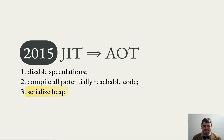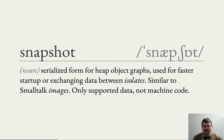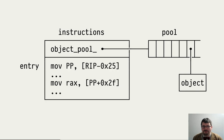The most interesting part is the serialization of heap structures. Dart VM already had support for serializing most of its internal heap structures through something called snapshots — serialized forms of heap object graphs, similar to what Smalltalk calls images. Unfortunately, by the point when we needed ahead-of-time compilation, it only supported data, not machine code. So we needed to figure out a way to serialize machine code, which requires performing relocation — similar to what a runtime linker does when loading an executable image.